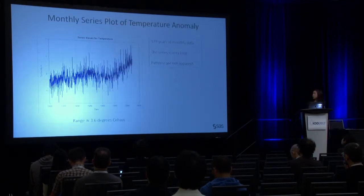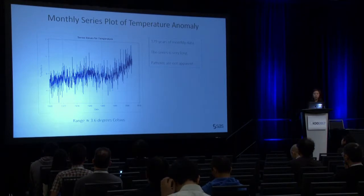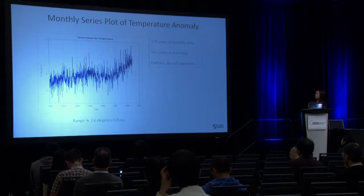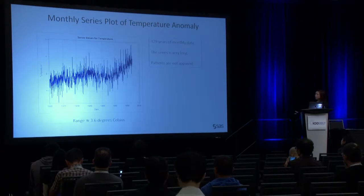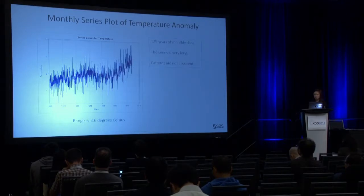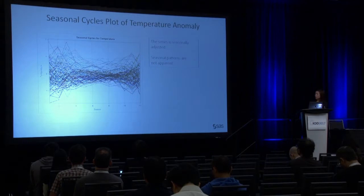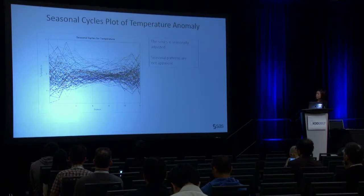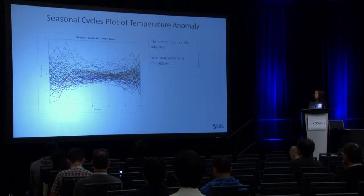Here is the data we use to showcase how we realize the SSA. It is 129 years of monthly temperature data. The series is very long and by just visually looking at the data you can't see any obvious patterns. Another plot of the same data plots January to December month by month for every year. The original series has been de-seasonalized, and on this plot you couldn't identify any apparent seasonal patterns.